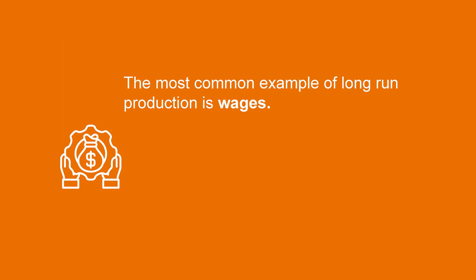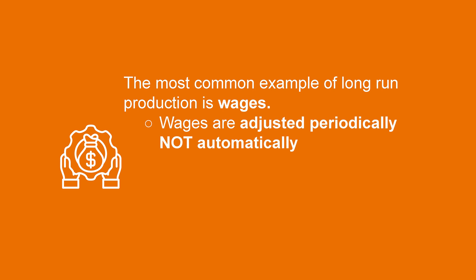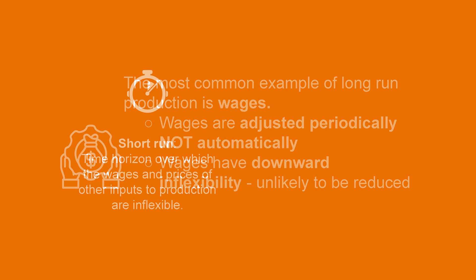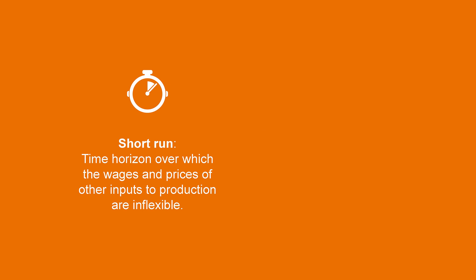In other words, the cost of each factor of production used to produce a final good or service is more inflexible in the short-term than the price of the final good itself. What's the most common example? Wages. Wages are the payments for labor, which is an input used for most final products. Wages have two main qualities: they are adjusted periodically and not automatically, and they have downward inflexibility, which means as they adjust they are unlikely to be reduced. Those qualities are significantly different from final products, which can adjust their prices more quickly.